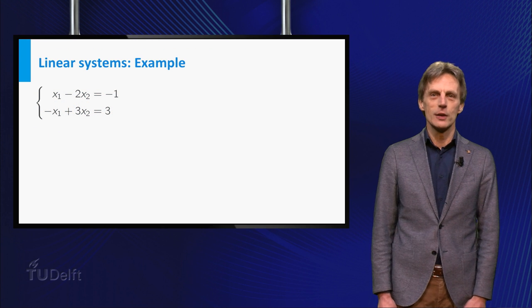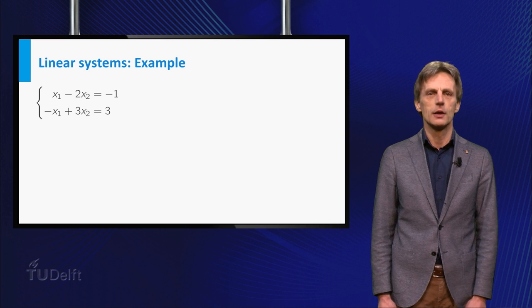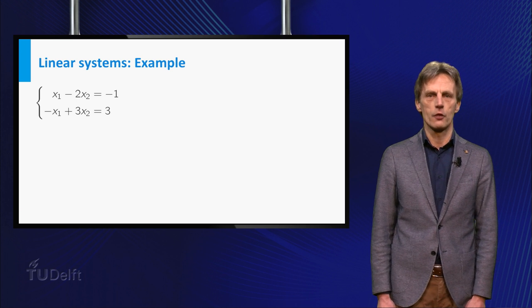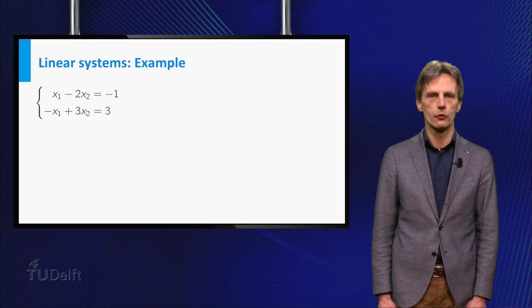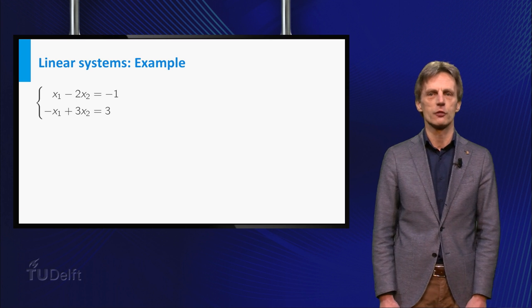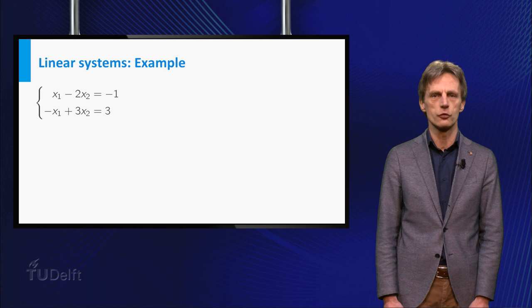Consider for example the following system of two equations. x1 minus 2 times x2 is equal to minus 1, minus x1 plus 3 times x2 is equal to 3. Geometrically this system describes a set of two lines in the x1, x2 plane.